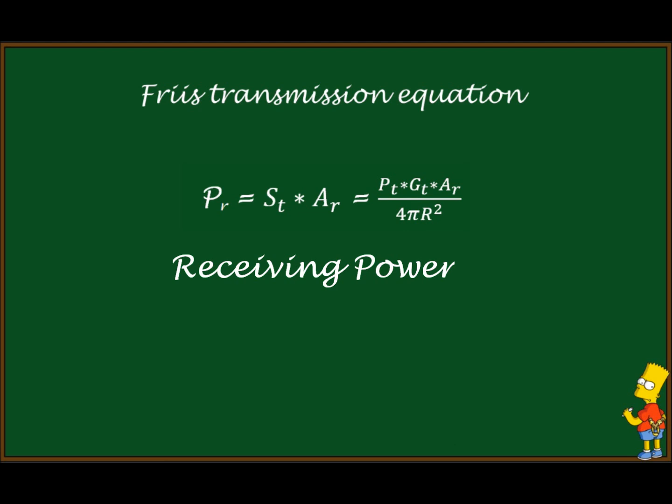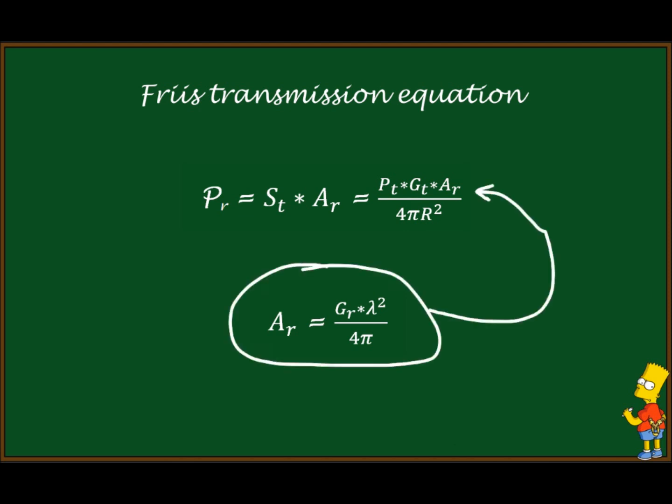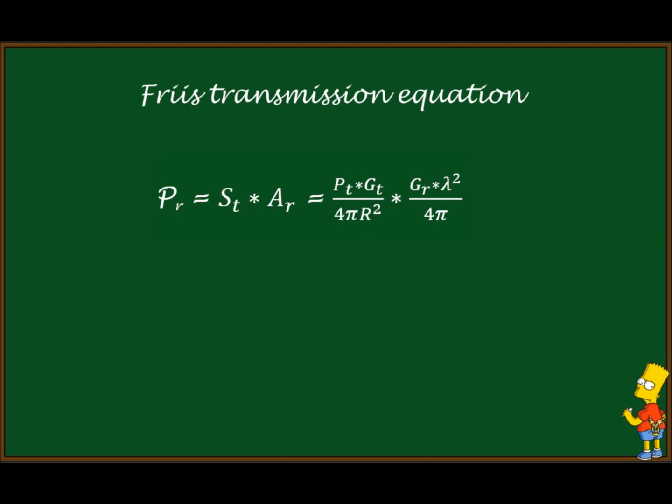Given in terms of the effective area, from the previous equation, replacing effective area, we got receiving power as this long expression that we can nicely put as: PR equals transmitting power, gain of transmitting and receiving antenna, wavelength, and sphere area.